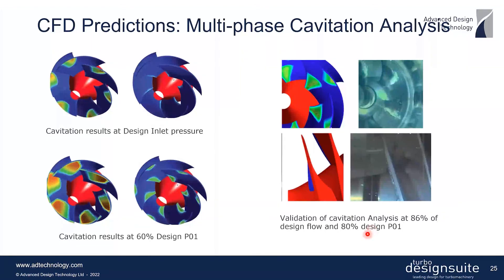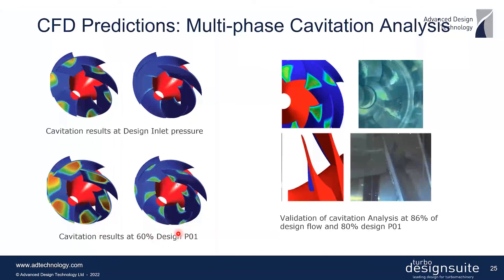They verified this using a multi-phase cavitation analysis. The contours show mass fraction of the vapor phase: blue means all liquid, while green or red indicates cavitation. The baseline impeller was cavitating at the inlet design pressure in several regions, but the new design was not cavitating at all at the inlet design pressure. At 60% of the inlet design pressure, cavitation expanded significantly in the baseline design, while the final design showed much improvement in the cavitating region. They also had access to a cavitation tunnel to verify their analysis.